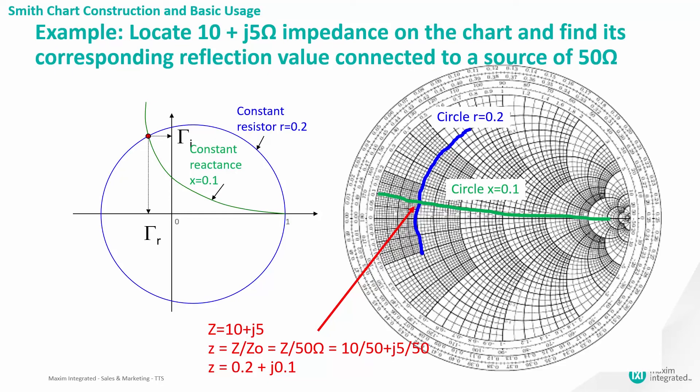Now, let's take a look at an example of how to locate the load impedance of 10 plus J5 on the Smith chart. First, we need to express the impedance in Cartesian format ZL equals R plus JX. Next, we need to normalize it by dividing by the source impedance, which is usually 50 ohms. Here, we'll have R equals 10 divided by 50, which equals 0.2, and X, which equals 5 divided by 50, or 0.1.